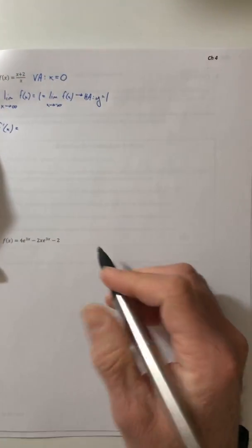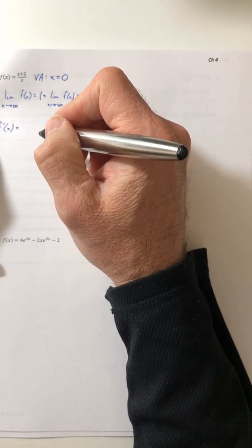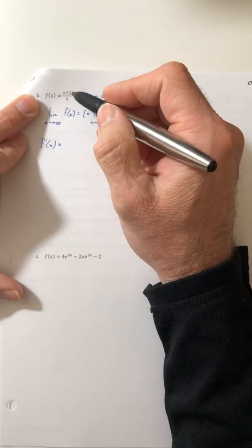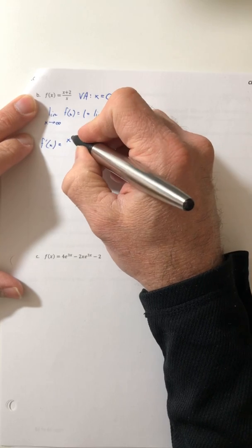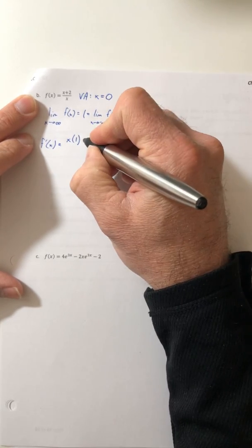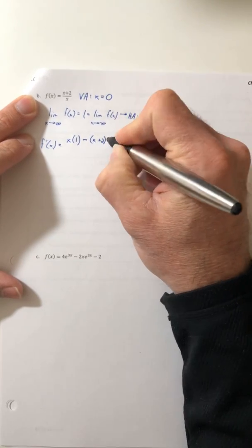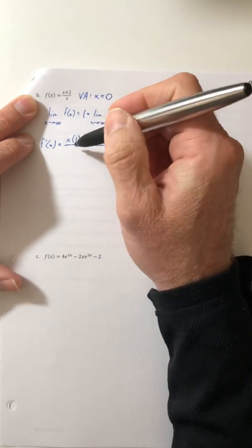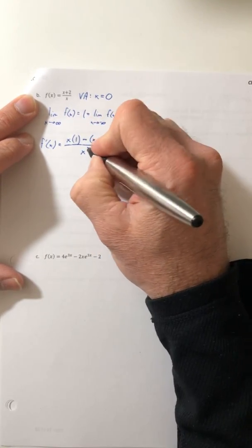All right, so let's go through and get our derivative. We can use the quotient rule. So the low times the derivative of the high minus the high times the derivative of the low. Low d high minus high d low and then square the bottom and there you go.